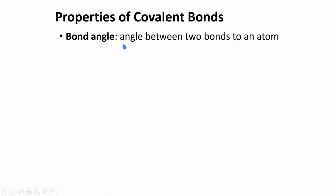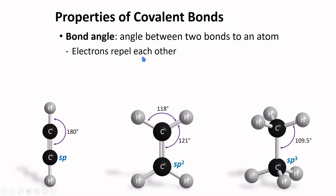Bond angle is the angle between two bonds to an atom. Now electrons repel each other according to the valence shell electron pair repulsion model. If there are only two groups of electrons around a central atom, these electrons will tend to be as far apart from each other as possible and in an SP hybridized carbon, this bond angle is 180 degrees.